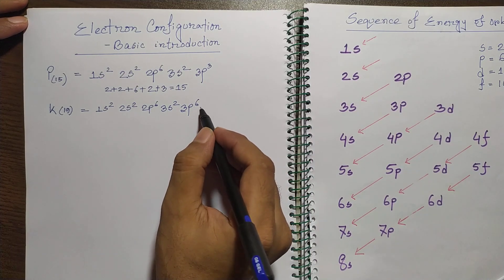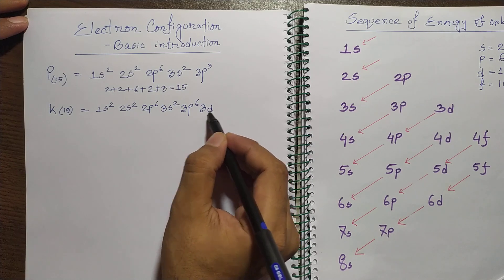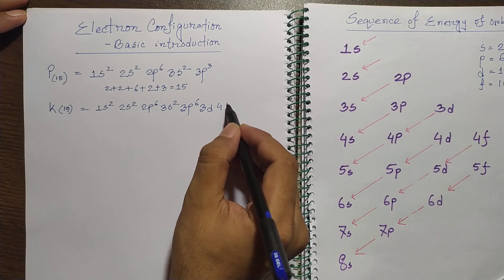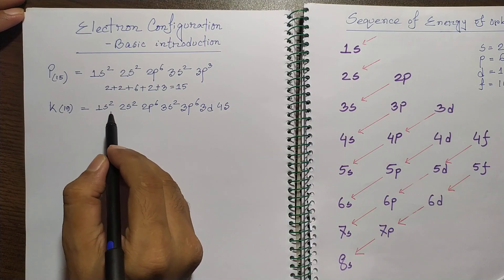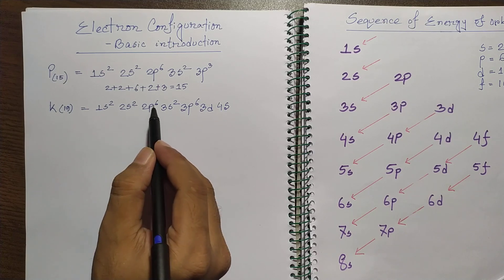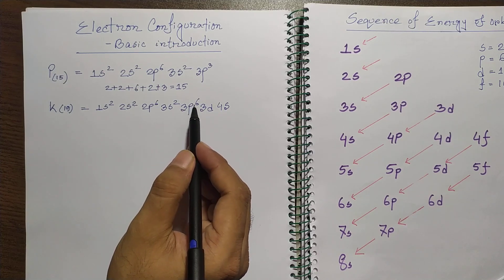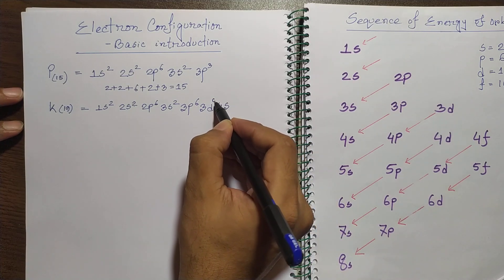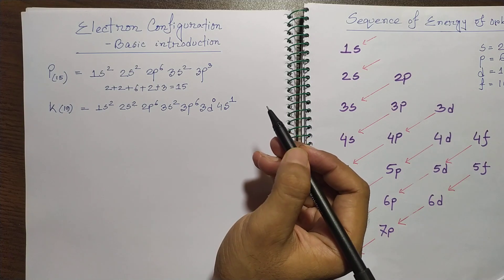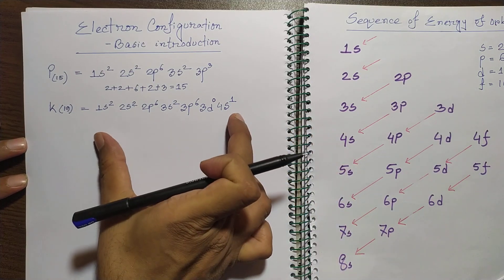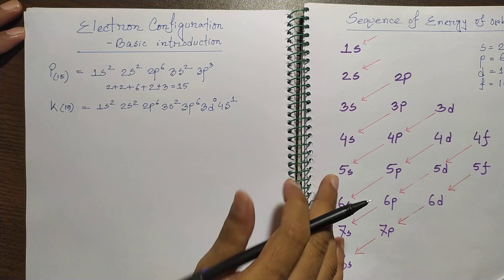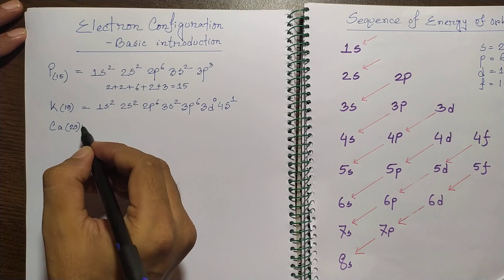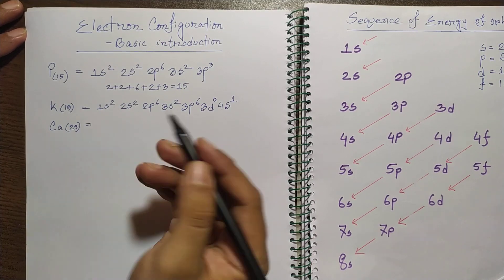After 3p6 you might expect 3d, but you know that before going to 3d the electron will move first to 4s. The number of electrons so far is 2+2+4+10+12 = 18, and potassium is 19. So there would be 0 electrons in the 3d orbital and 1 electron in 4s, giving 4s1. This is the electron configuration of potassium.